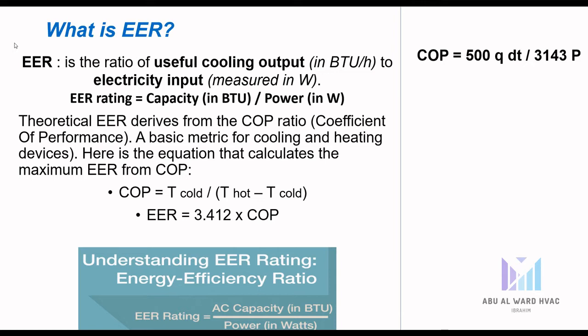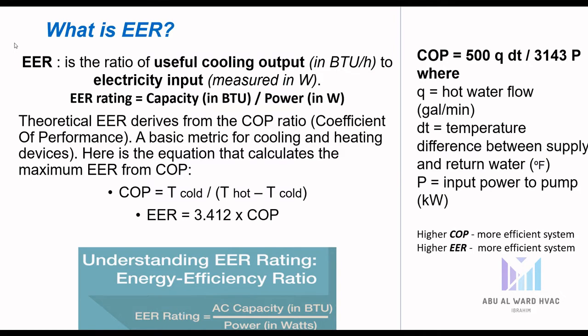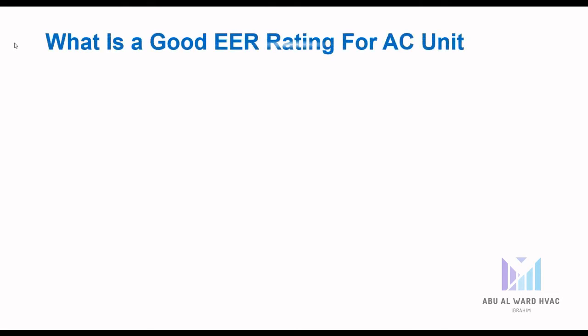COP also equals 500 × Q × ΔT divided by 3143 × P, where Q is hot water flow in gallons per minute, ΔT is the temperature difference between supply and return in Fahrenheit, and P is the input power to the pump in kilowatts. We also need to know that the higher the COP, the more efficient the system — the same applies to EER: higher EER means a more efficient system.